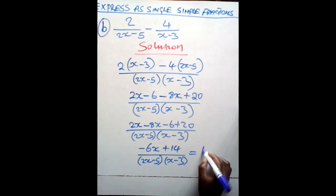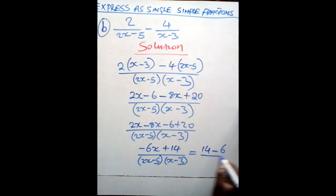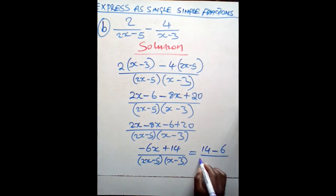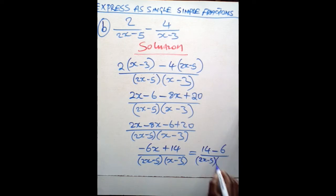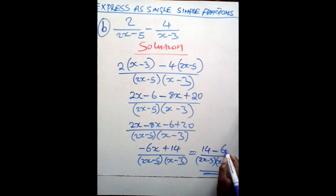We say (14 minus 6x) over (2x minus 5)(x minus 3). So at this point, you have simplified in single format.